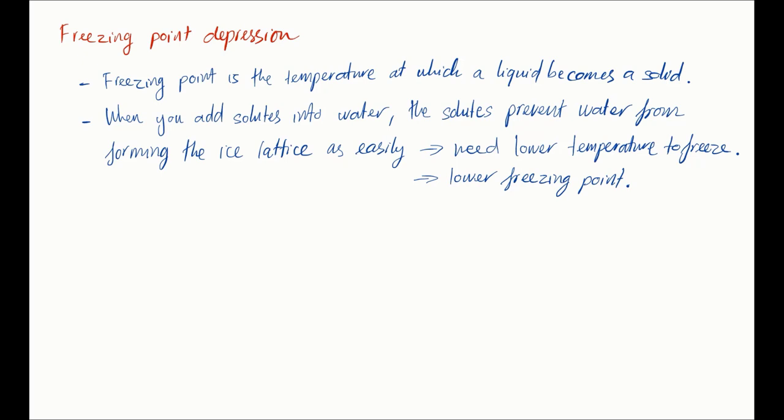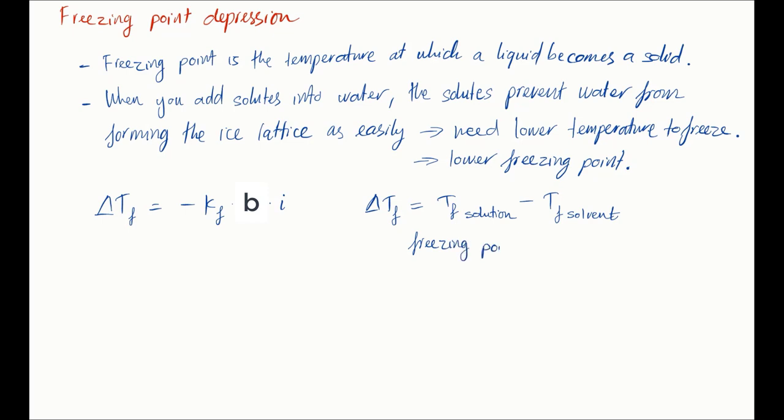So the freezing point depression, or the difference between the freezing point of the solution and the freezing point of the solvent, is equal to minus kf times molality times i, the van't Hoff factor. This equation is similar to the boiling point elevation equation above. The only difference is kf, the freezing point constant, or as people call it, the cryoscopic constant. And it has a negative sign to indicate that the freezing point will decrease.